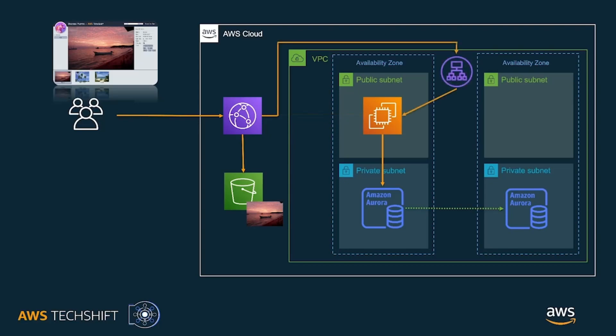To do this, we will first introduce an application load balancer between the CloudFront distribution and the EC2 instance. Application load balancers are part of the elastic load balancing family and operate at layer 7 to balance HTTP and HTTPS traffic. They can support HTTPS termination to help manage SSL certificates. The ALB will balance traffic between the web server nodes as well as being responsible for determining the health of instances.